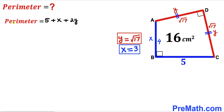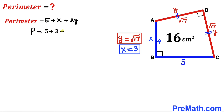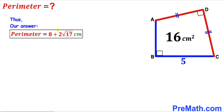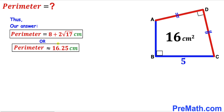Now we are going to calculate the perimeter of the quadrilateral, substituting x equals 3 and y equals square root of 17. The perimeter P is 5 plus 3 plus 2 times square root of 17. Simplifying: the perimeter P equals 8 plus 2 times square root of 17 centimeters. After all calculations, the perimeter of this quadrilateral turns out to be 8 plus 2 times square root of 17 centimeters, which is approximately equal to 16.25 centimeters. That's our final answer.